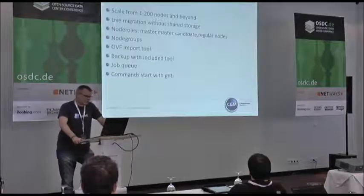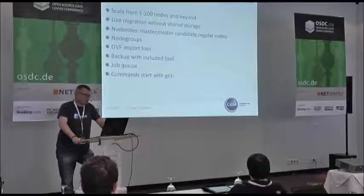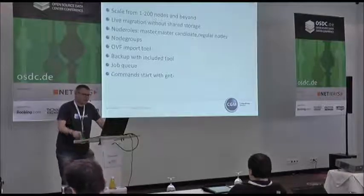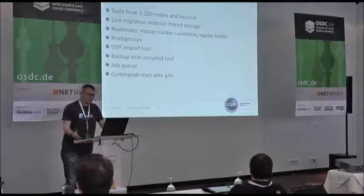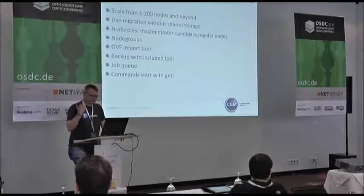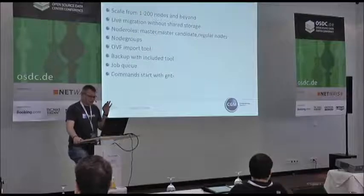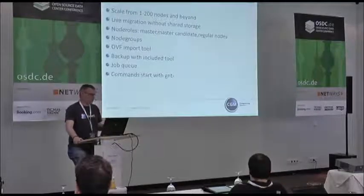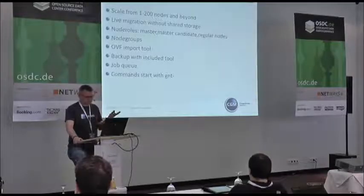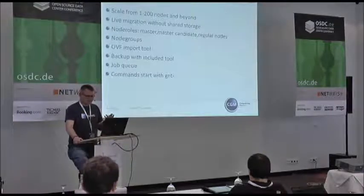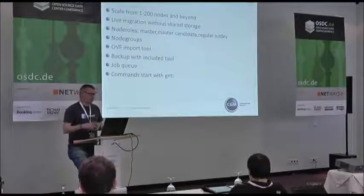Features: it scales from 1 to 200 nodes. You can start very small with one node, no replication, test how it behaves, and if you add a second node you can enable replication with just one single command. It supports live migration without shared storage using DRBD. Node roles: there is a master, which is your entry point for the cluster; master candidates, which get the cluster state replicated automatically; and regular nodes, which just run virtual machines. You can have node groups — for example, a rack of servers where you keep replication on the backplane of the same switch rather than going across switches.